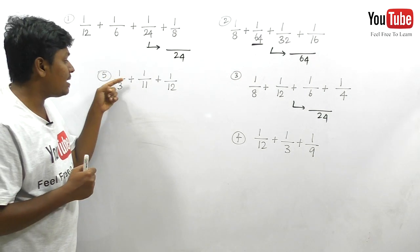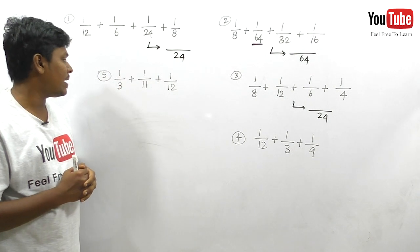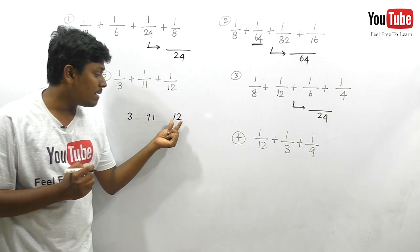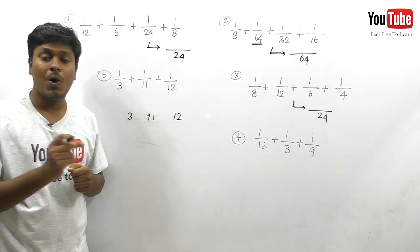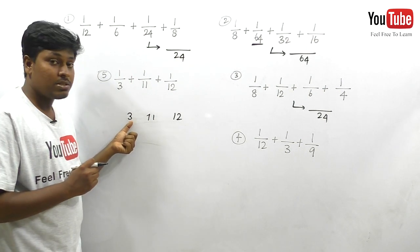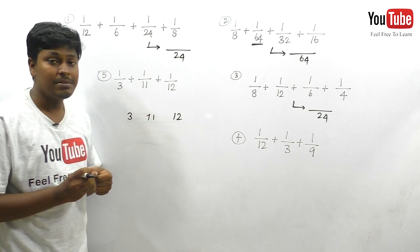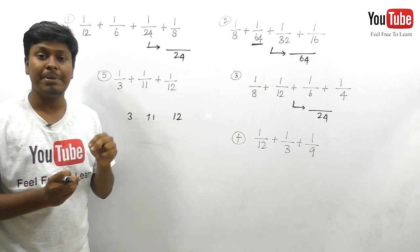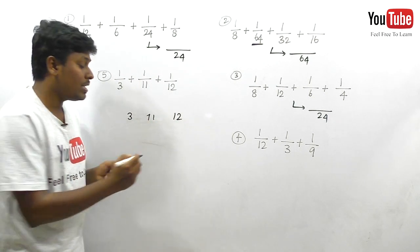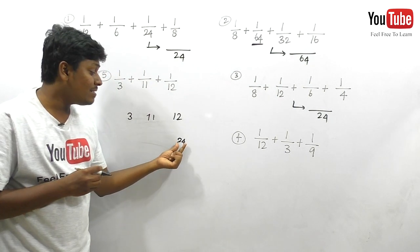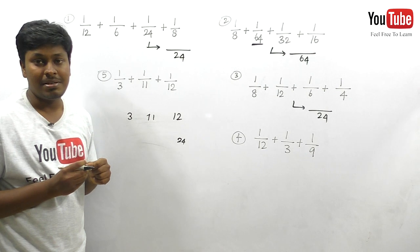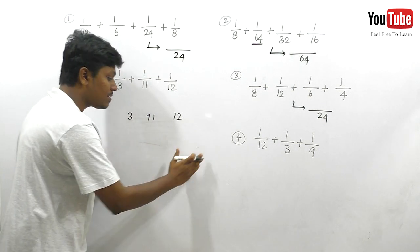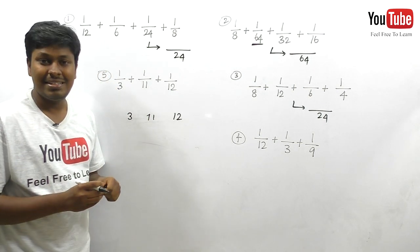Let me move on to the fifth question: 1/3 + 1/11 + 1/12. The numbers are 3, 11, 12. First target the larger number: 12. Check whether 12 is divisible by all remaining numbers: 4 × 3 = 12, but 12 is definitely not divisible by 11. So 12 will not be an LCM. Rule 2: 12 × 2 = 24. Check: 24 is divisible by 3, but 24 is definitely not divisible by 11. Rule 2 fails.